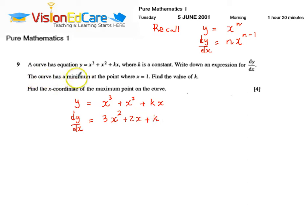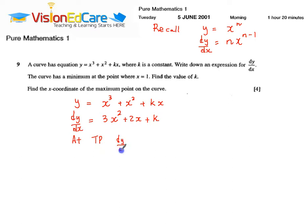At this minimum turning point, dy by dx equals 0. You need to recall that at a turning point, dy by dx equals 0. Therefore, 3x squared plus 2x plus k equals 0.